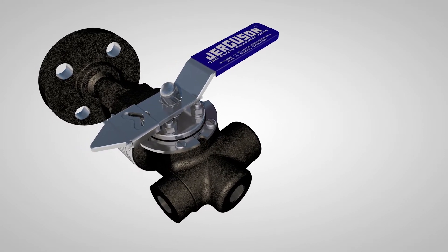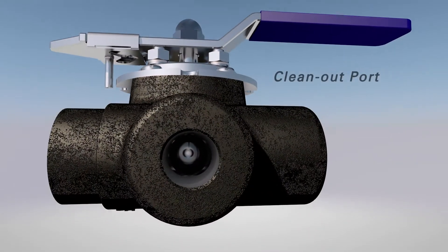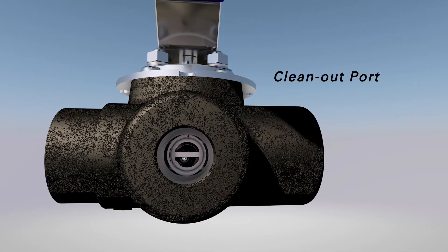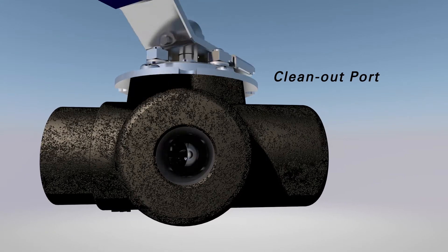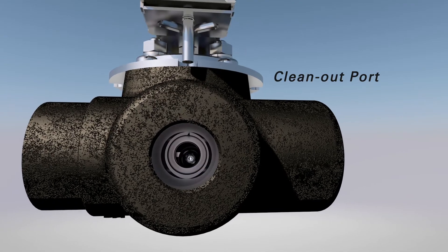The robust body is rated to 900-pound pressure class. A clean-out port opposite the vessel connection allows for quick inspection of the valve internals or may be used as a flushing point for online maintenance in dirty service.